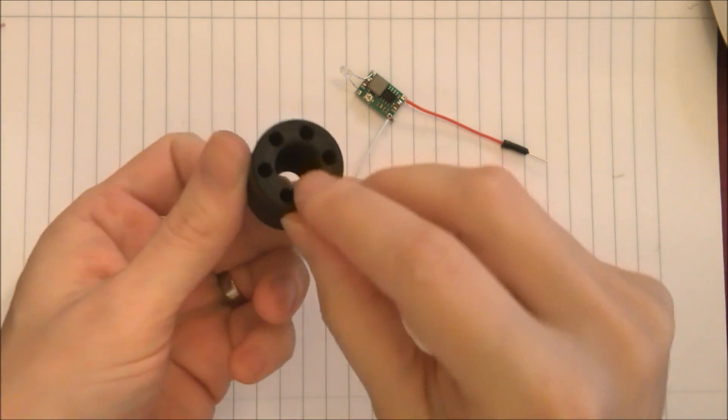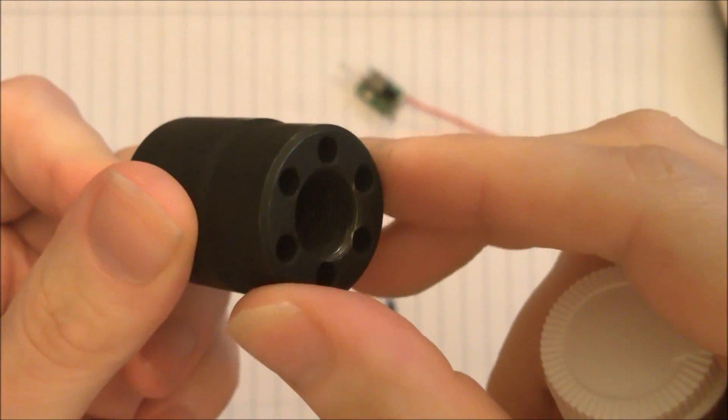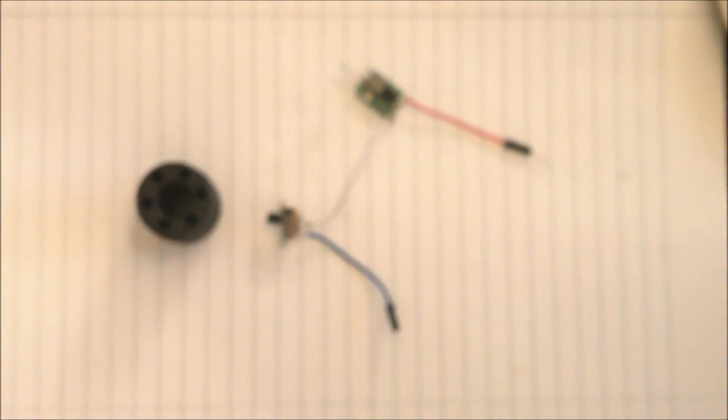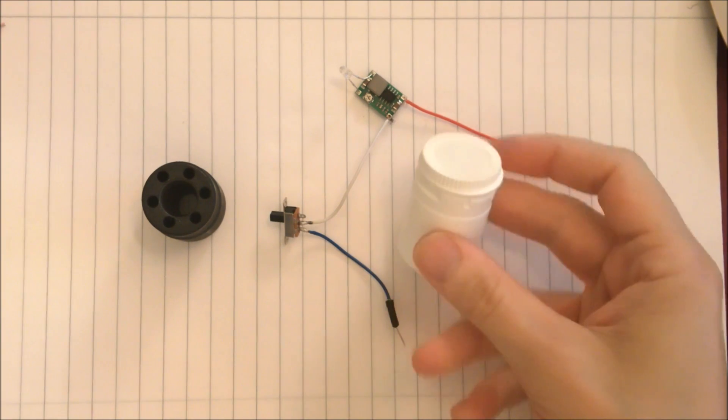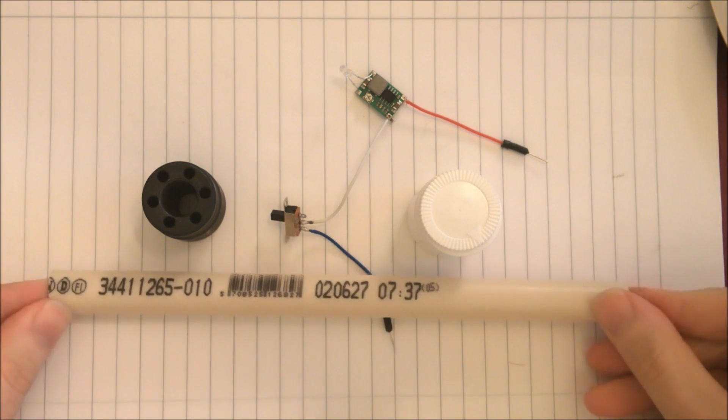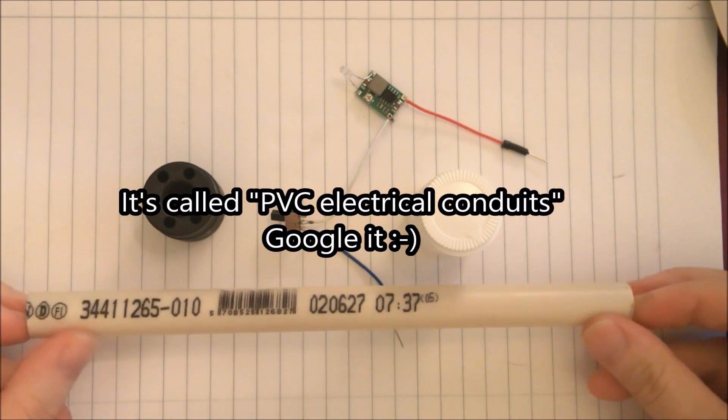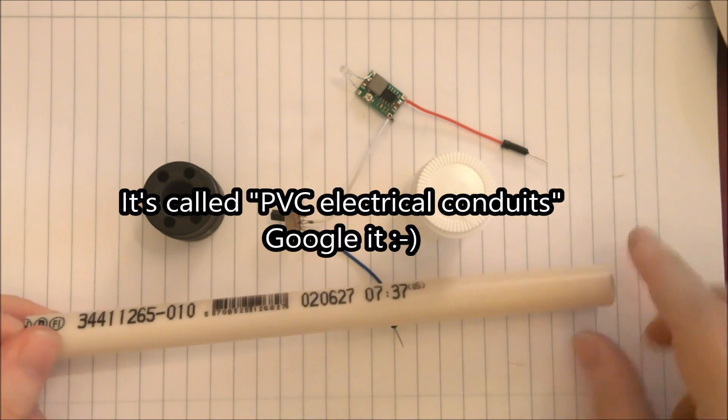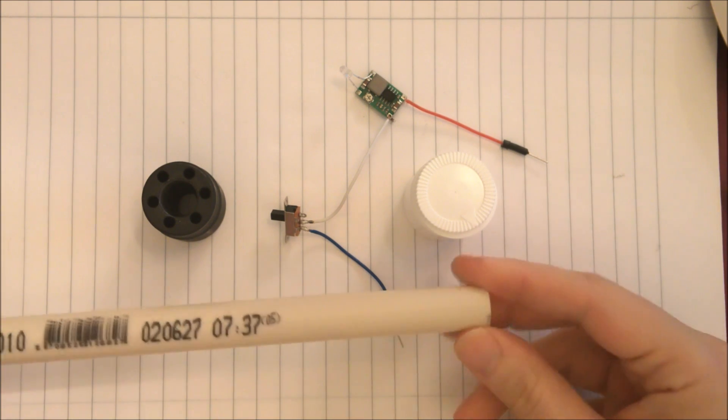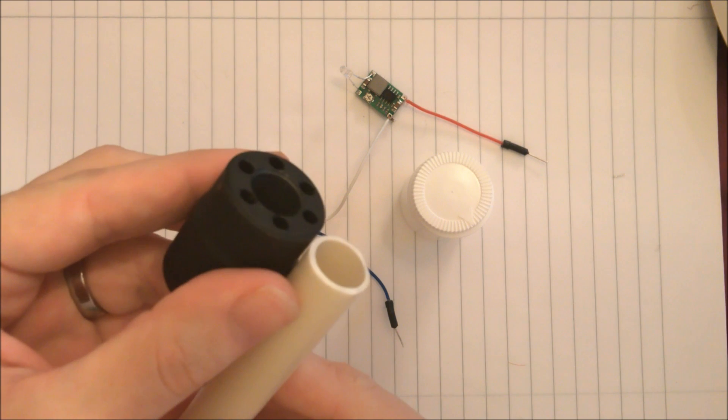Now this has threads in it. This doesn't. But I found this short piece of electrical wire plastic wiring. You can get these in almost any hardware depot. The diameter of these two is almost the same.